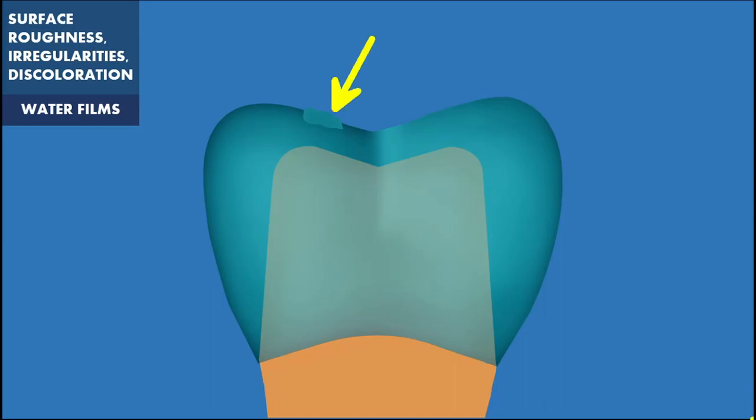A wetting agent or an application of a detergent over the wax pattern is useful for the prevention of such irregularities.